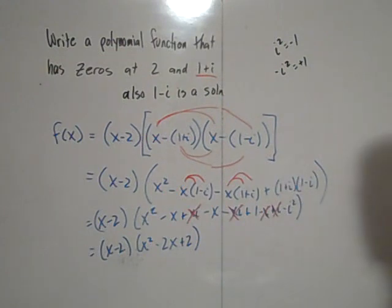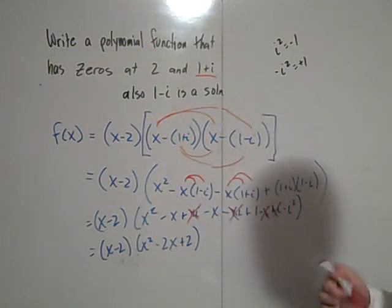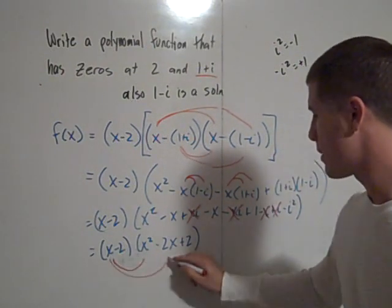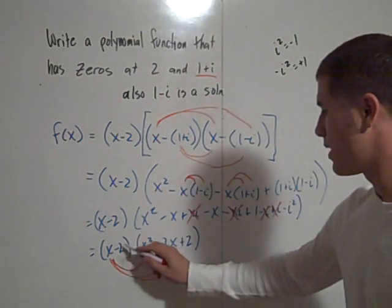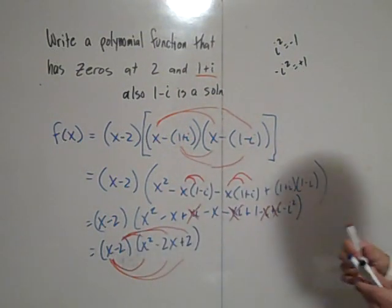All right, looks a lot better already. And then, finally, we can multiply all this out. So x times x squared, x times negative 2x, x times 2, and that's negative 2 times. So distribute all that out.